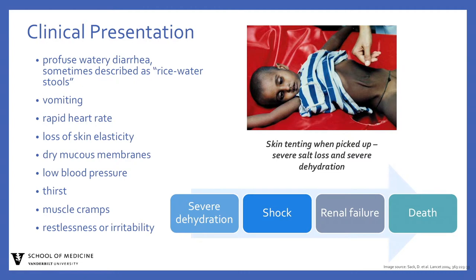Severe dehydration can rapidly lead to shock and death, even within hours. Profuse diarrhea produced by cholera patients contains large amounts of infectious Vibrio cholerae bacteria that can infect others if ingested, and when these bacteria contaminate water or food, it will lead to additional infections.